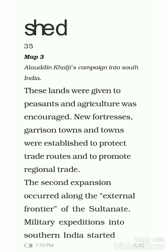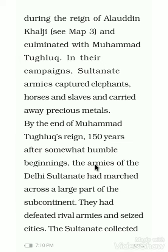The second expansion occurred along the external frontier. One expansion was in the interior part of the kingdom and another on the external frontier — meaning the borders. As we discussed, Mongol attacks were frequent during this period, so to protect themselves the Delhi Sultans fortified the border areas and stationed soldiers there.